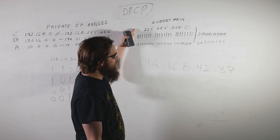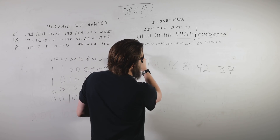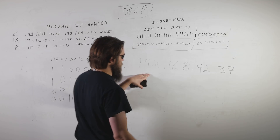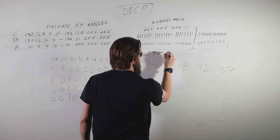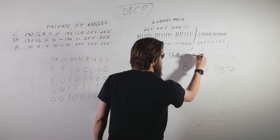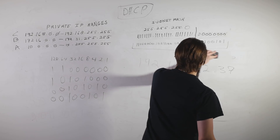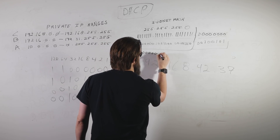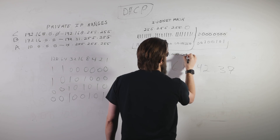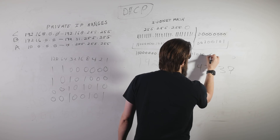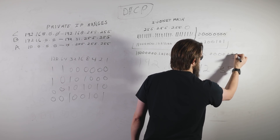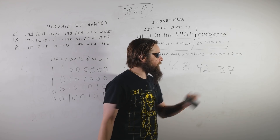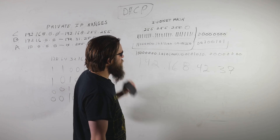Now we do a logical AND operation across the IP address and the subnet mask. The subnet mask 255.255.255.0 in binary has all ones in the first three octets and all zeros in the last. ANDing across gives us the same first three octets and zeros for the last. So our network address for 192.168.42.37 is 192.168.42.0 — that is the network address we exist on.